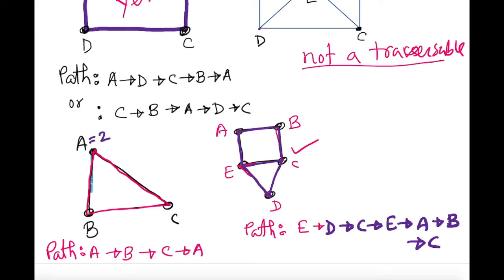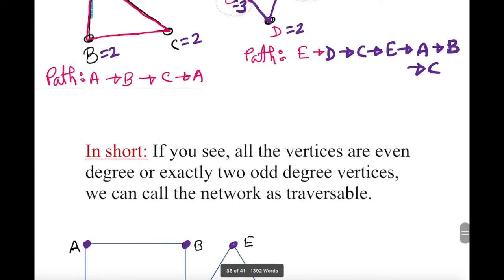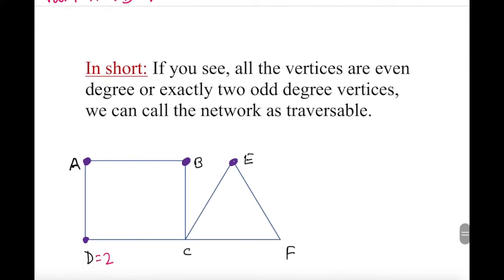I notice that looking at the vertices — each had degree two, so all even degrees — and that gave us a traversable network. What about a network where the degree of vertices are two, two, two, three, two, three? If we have exactly two odd-degree vertices, that also gives us a traversable network. So: if all vertices have even degree, or exactly two vertices have odd degree, the network is traversable.